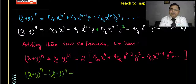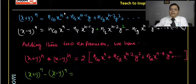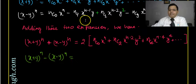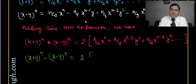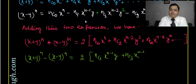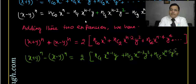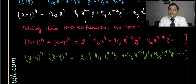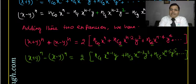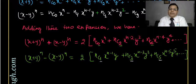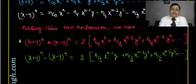When we subtract x minus y to the power n from x plus y to the power n, all even powers cancel and odd powers double. The result is 2 times: nC1 x to the power n minus 1 y plus nC3 x to the power n minus 3 y cubed plus nC5 x to the power n minus 5 y to the power 5, and so on. So while adding we get twice the even coefficients (r = 0, 2, 4), and while subtracting we get twice the odd coefficients (r = 1, 3, 5). This is very important and you must remember it.